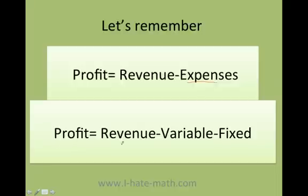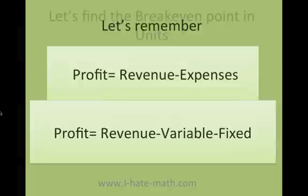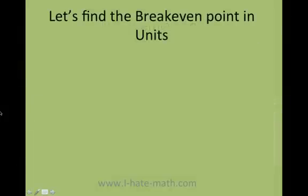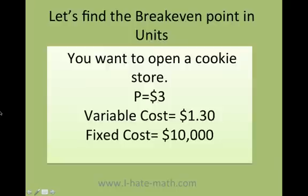Anytime you want to figure out the profit, you use this formula: revenue minus variable cost minus fixed cost. Let's do an example to find the breakeven point in units. Say you want to open a cookie store. The price of each cookie is three dollars, the variable cost is one dollar thirty.